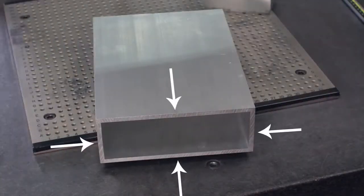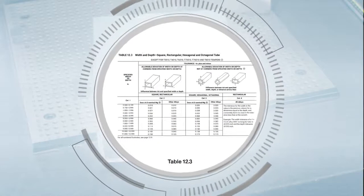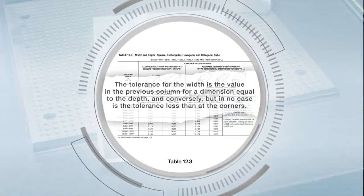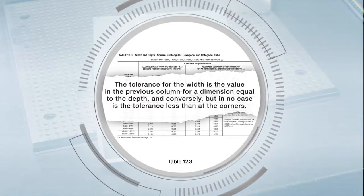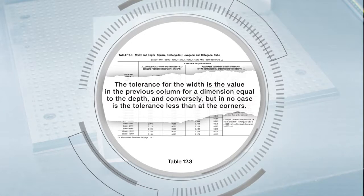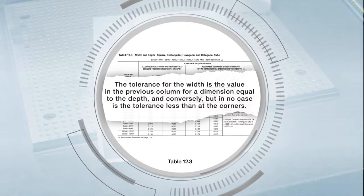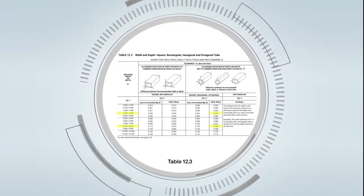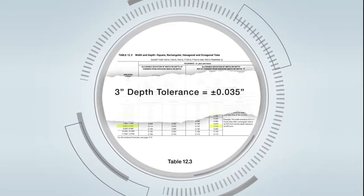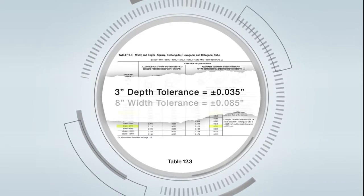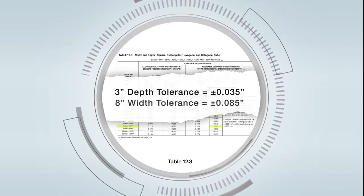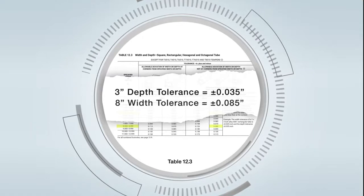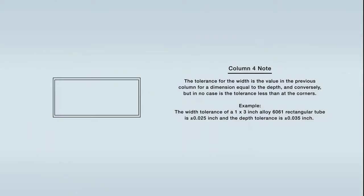We also need to find the tolerances for the width and depth slightly away from the corners towards the middle, to account for any deviation away from the corners. To find these tolerances, we will refer to the note in column 4. To break down this statement, we will start by using column 3 to find the tolerances for the 3 inch depth and 8 inch width. The 3 inch tolerance is plus or minus 0.035 inches and the 8 inch tolerance is plus or minus 0.085 inches. Next, we are going to put these values into a chart to show how the tolerances for width and depth need to be reversed.